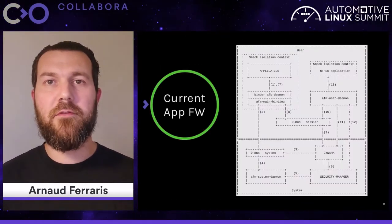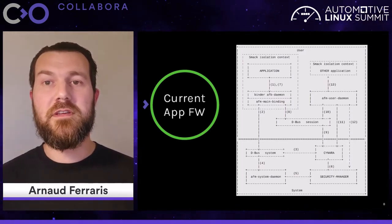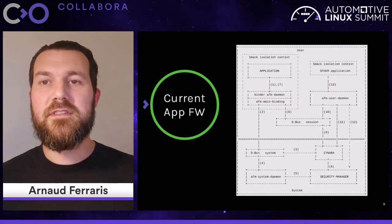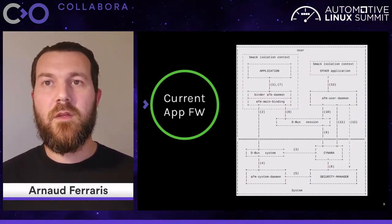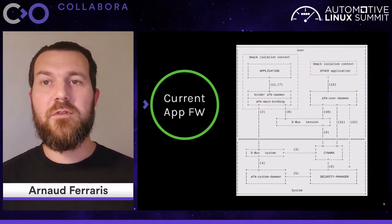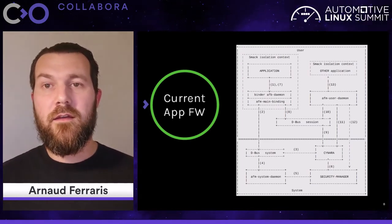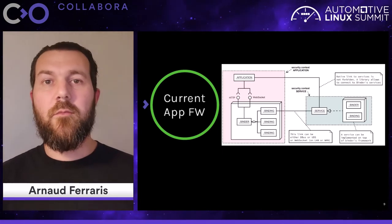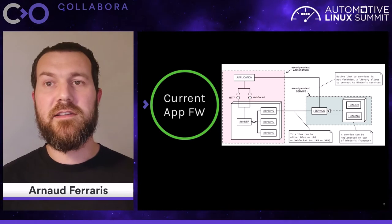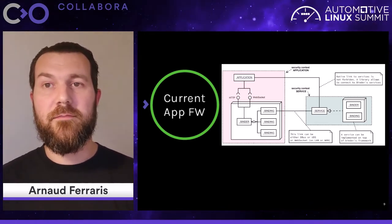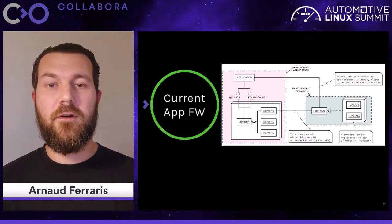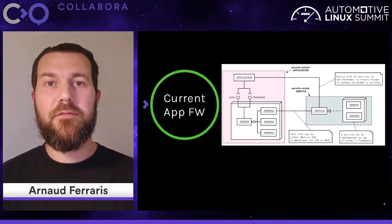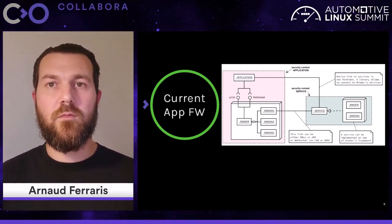On this slide you get a brief overview of how the current app framework works. You can see the separation between the system processes and the user processes at the top of the slide, and a few non-standard elements: the AFM user daemon, the AFM main binding. For a single application you have a binding service embedded into the application security context, the actual service running in its own context, all managed through the AFM user daemon for user processes and AFM main daemon for session management and the security interface.